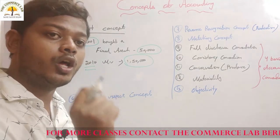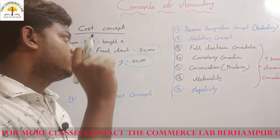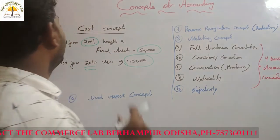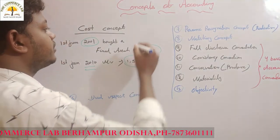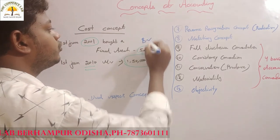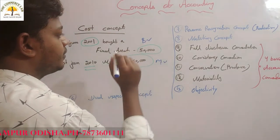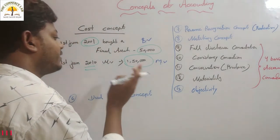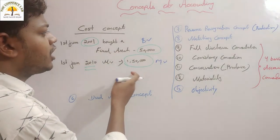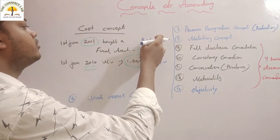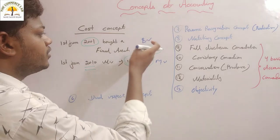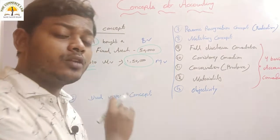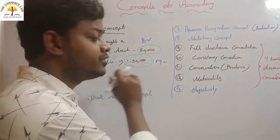Based on Cost Concept, we always record the fixed asset as per the book value. So what is the book value of this asset? The book value would be 50,000; the market value would be 1,50,000. So the book value was 50,000. You can ask — if the value was 1,50,000 and you wrote 50,000, there should be a concept gap in this. Yes, this concept also has some limitations because of this reference, which I will explain in the later part.